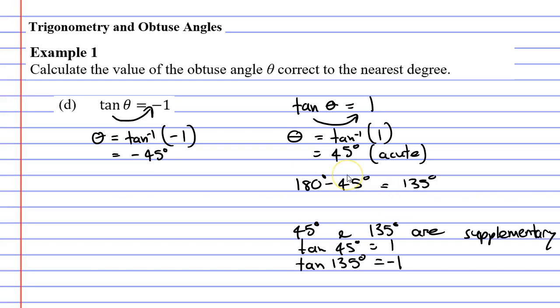And what you'll notice is that we've found an obtuse angle, the angle of 135 degrees, that when you apply the tan function gives you negative one which is exactly what we were looking for. So theta must be 135 degrees.